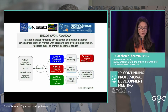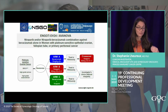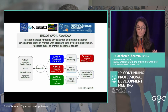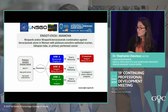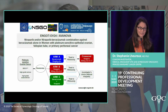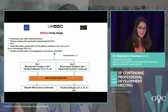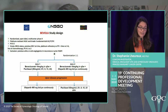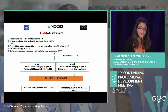Another ongoing trial in platinum-sensitive recurrence randomizes patients between bevacizumab, niraparib, or the combination. A further trial in the platinum-resistant setting tests weekly paclitaxel plus bevacizumab (standard of care) against olaparib plus bevacizumab. Both trials have completed enrollment and results are coming soon.